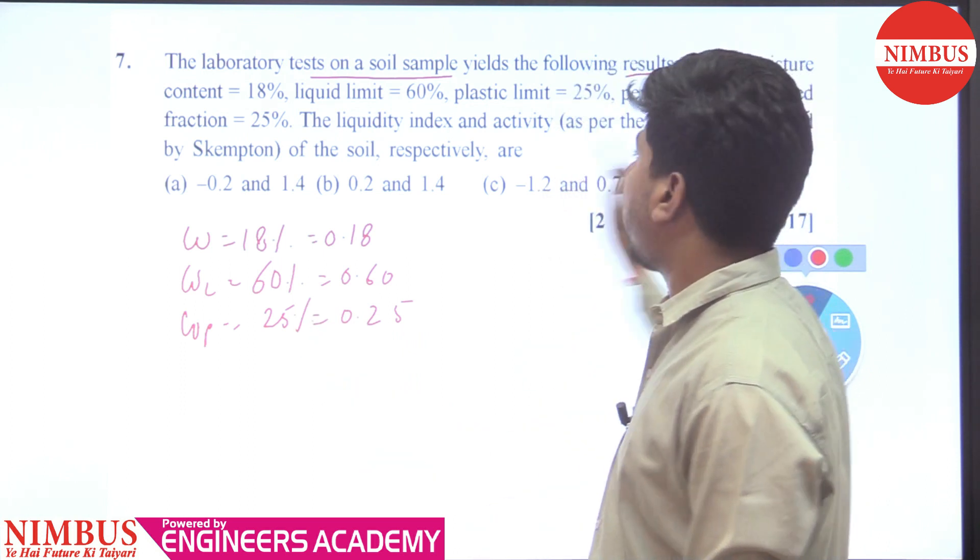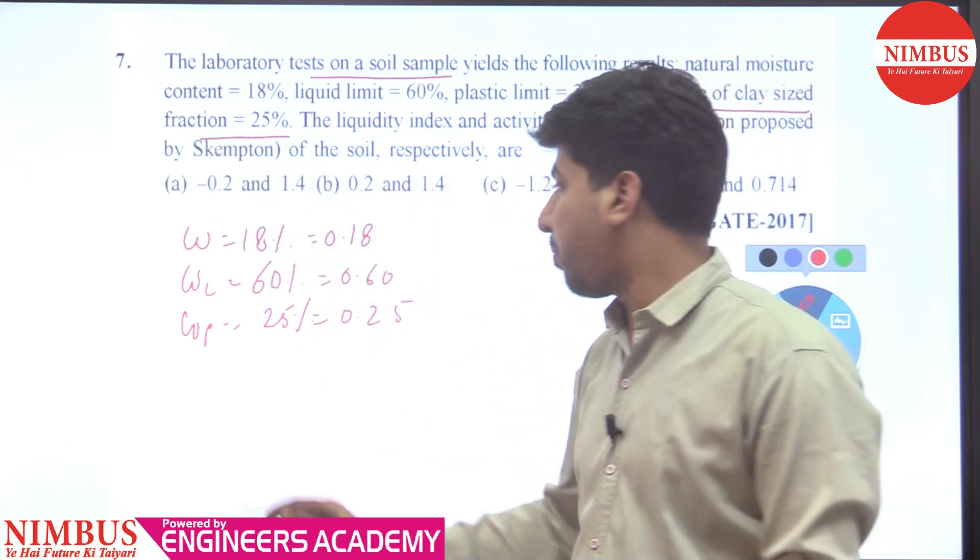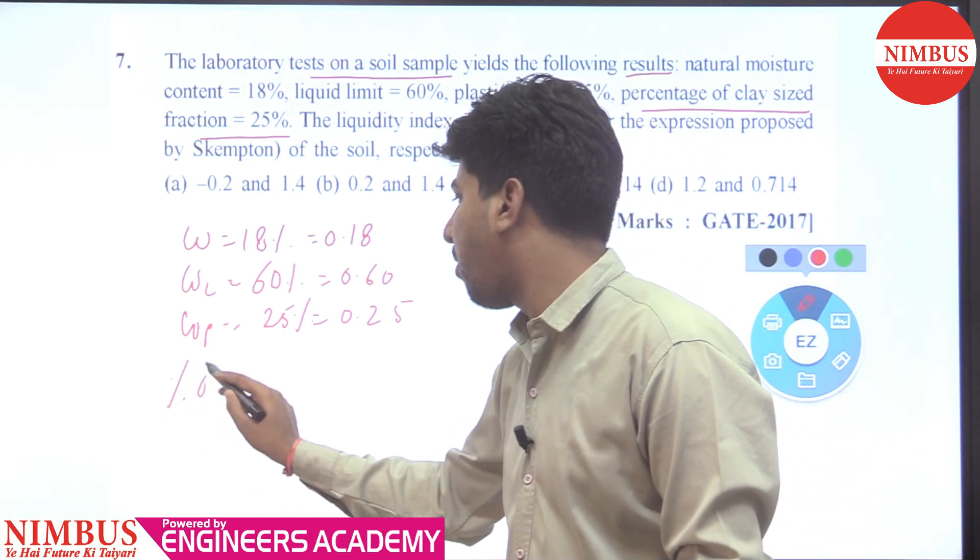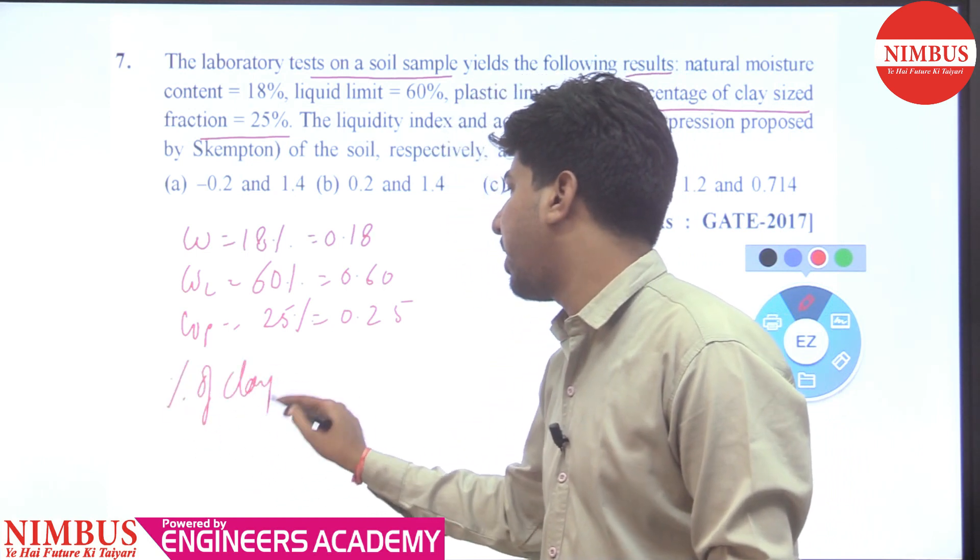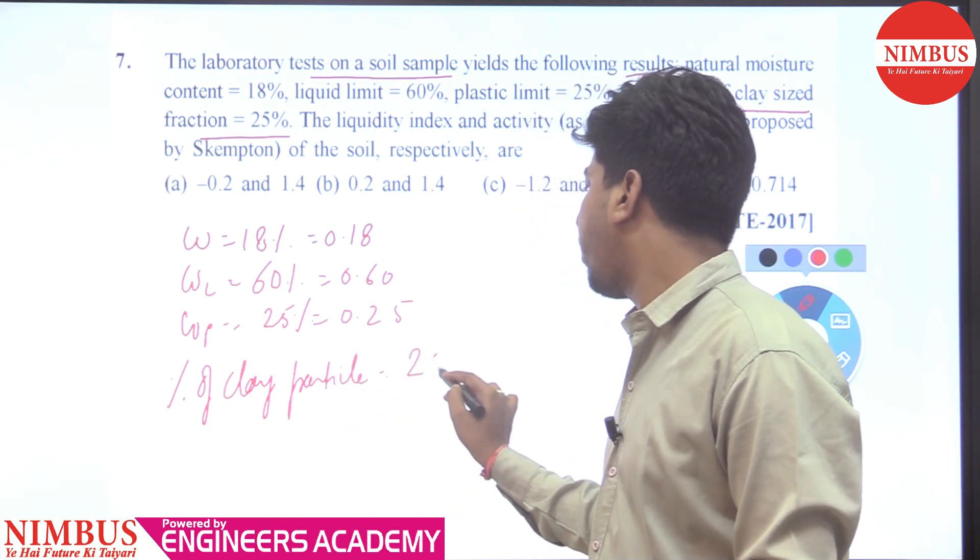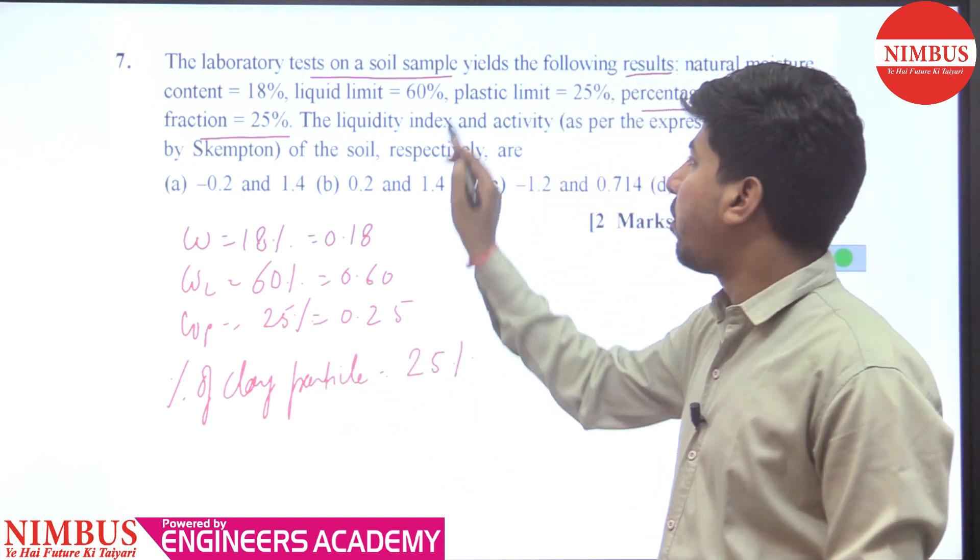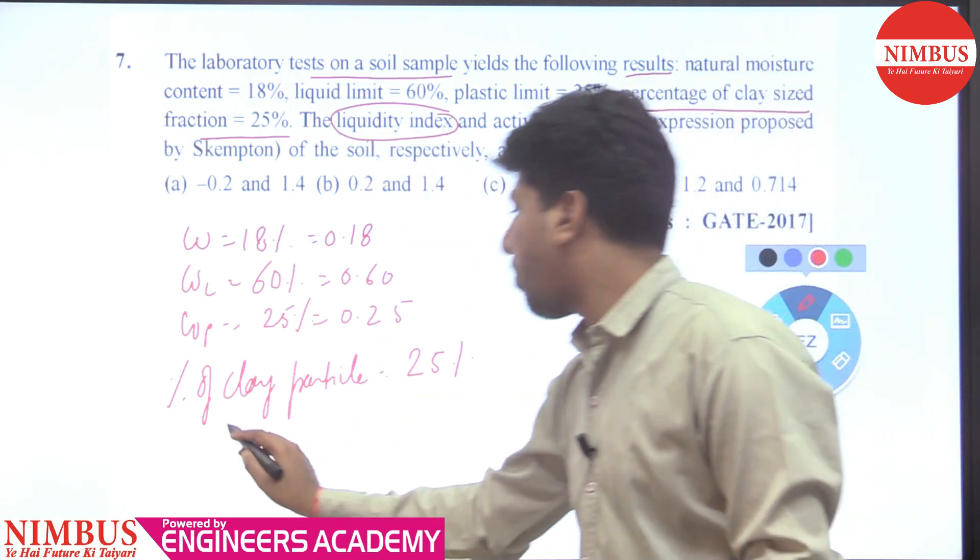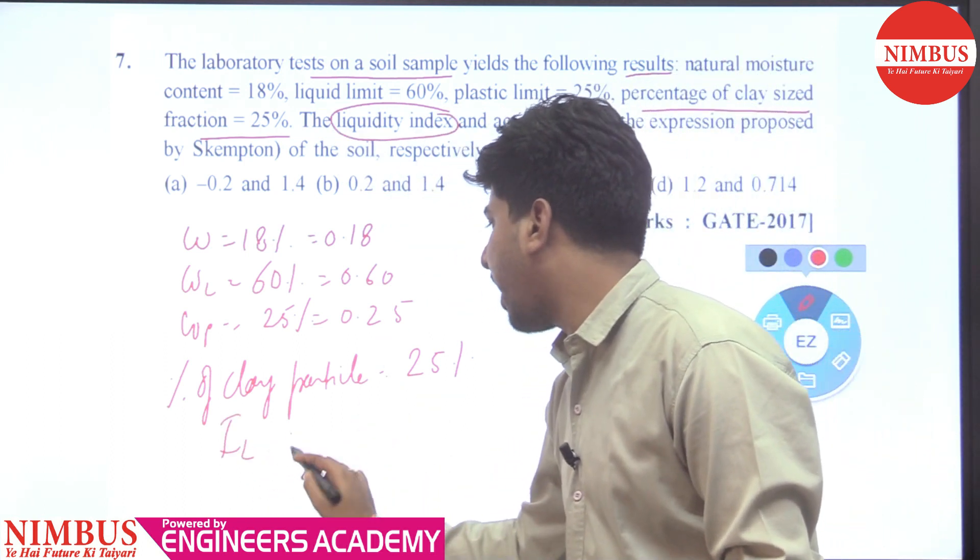And the percentage of clay size fraction is 25%. Percentage of clay particle is given as 25%. The liquidity index IL and activity AC, liquidity index and activity need to be calculated.